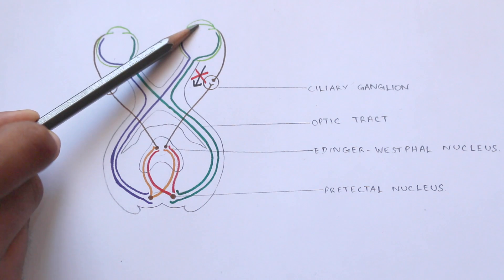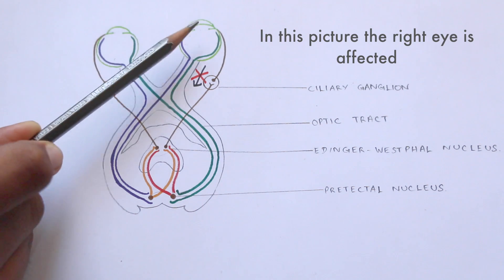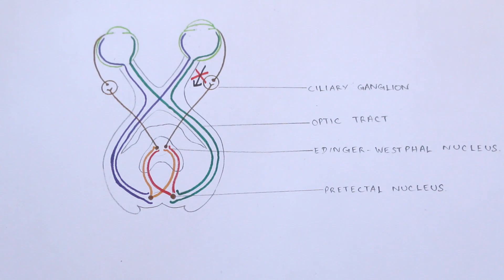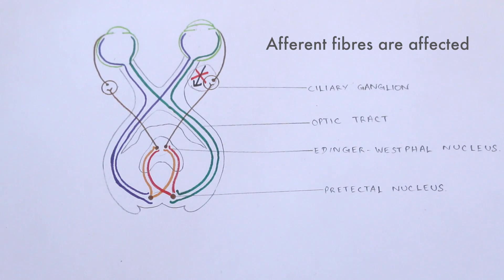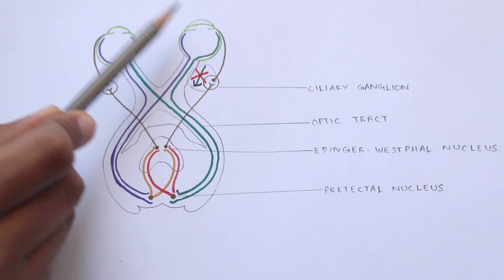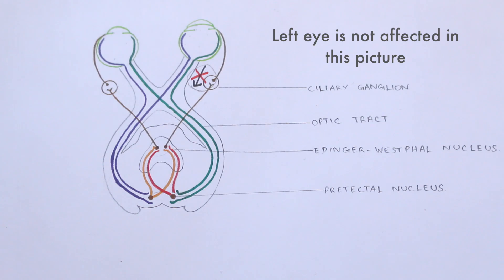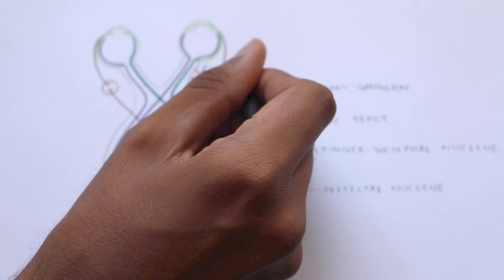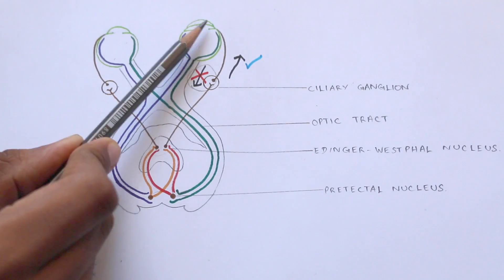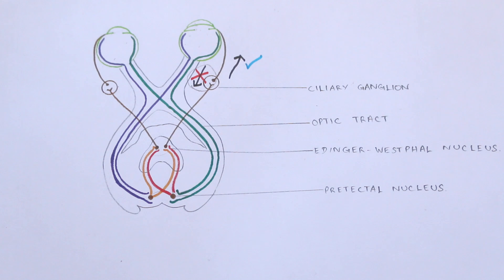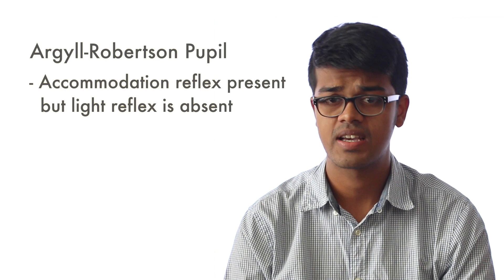A flashlight is swung from the affected eye to the unaffected eye. When light is shown on the affected eye, no change or minimal constriction is observed in both eyes — recall that the fibers carrying impulses away from the eye are affected. When the light is swung over to the unaffected eye, constriction of both pupils is observed. When the light is shown back on the affected eye, the pupil will be dilating. This phenomenon is commonly seen in optic neuritis, which is an inflammation of the optic nerve.